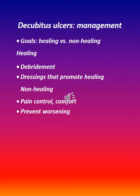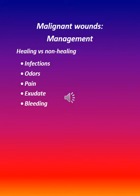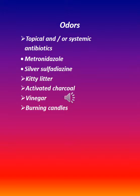Decubitus ulcer management goals — healing vs. non-healing. For healing: debridement and dressings that promote healing. For non-healing: pain control, comfort, and prevent worsening. Dressing types include foams, alginates, hydrogels, hydrocolloids, thin films, and cotton gauze, in a moist interactive environment with infection control. Malignant wound management addresses healing vs. non-healing, infections, odors, pain, exudate, and bleeding. Odor management includes topical and/or systemic antibiotics, metronidazole, silver sulfadiazine, kitty litter, activated charcoal, vinegar, and burning candles.